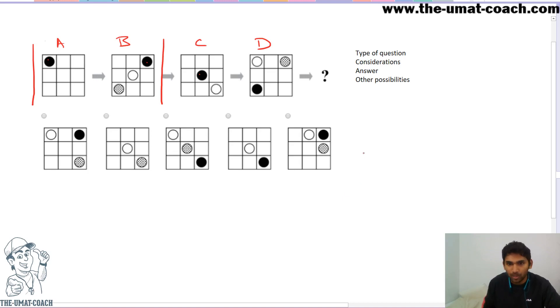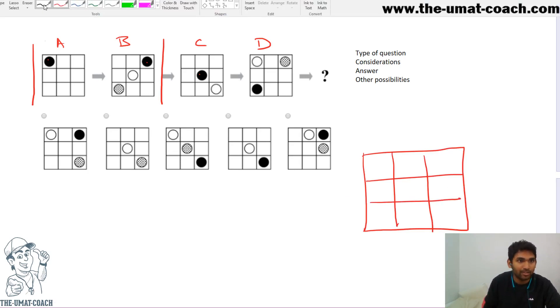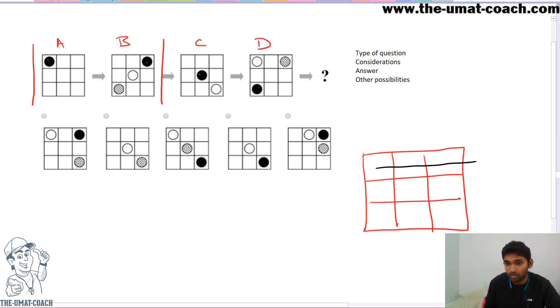So in any 3x3 grid, what are the different possibilities that we can have in terms of movement? Firstly, we can have it such that a ball or shape just goes across, and when it reaches the end it comes to the other side like that. So when it reaches there it comes to that side and so on.